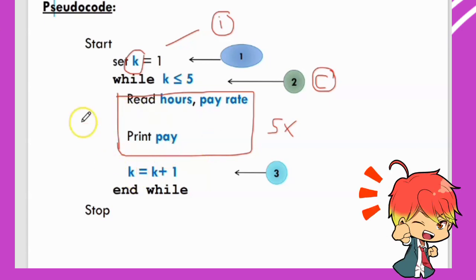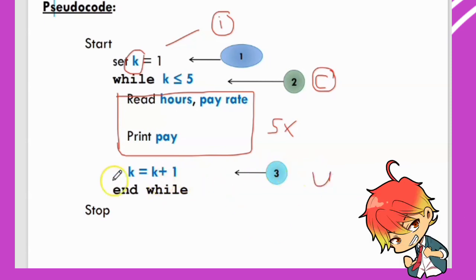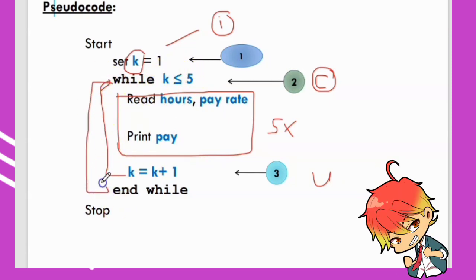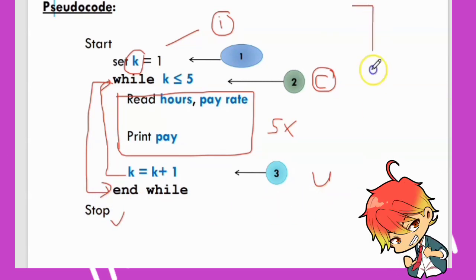If the condition is true, read hours and pay rate, then print pay — this statement will be repeated five times. To repeat, you need the updating value: k equal to k plus one. k=1, 1+1=2, check condition again — this statement will be executed until the condition becomes false, then write 'stop'. That is the pseudocode.